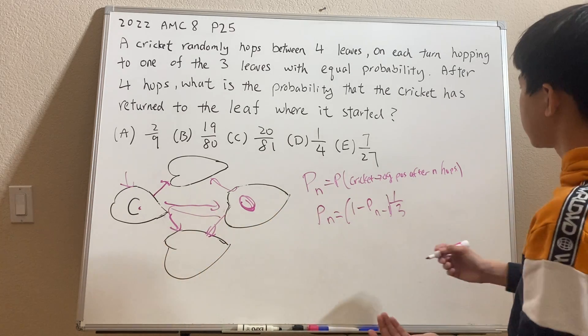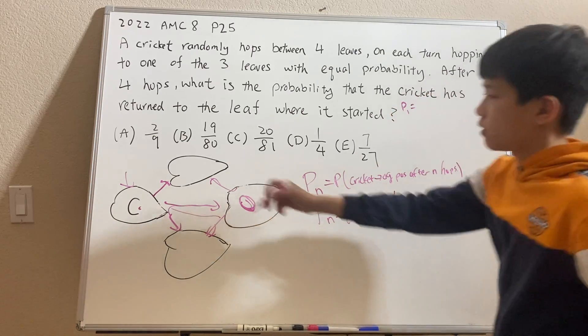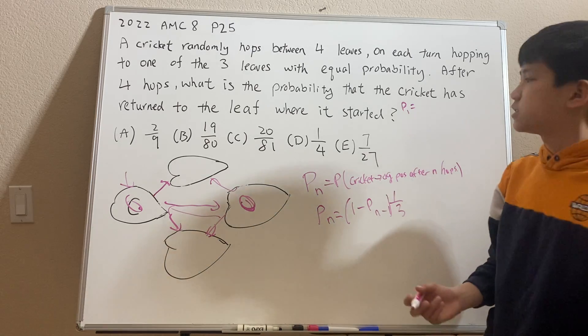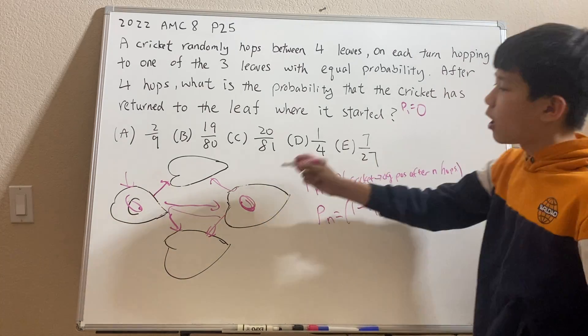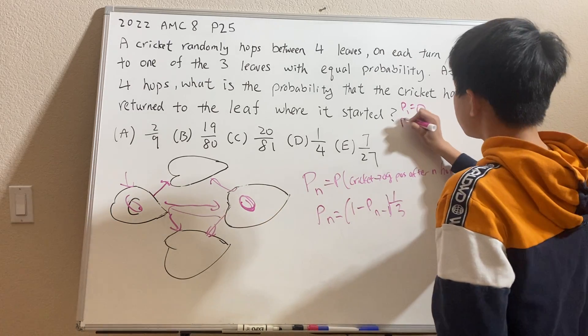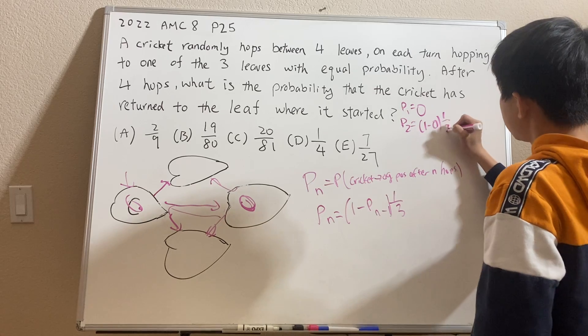So now we can just start plugging in values. P(1), after one hop, so in the beginning, the cricket is right here in the original position. P(1) is just zero because it's impossible to return to its original position. Now P(2), we can just plug into the recursion, just chug it in. 1-0 times 1/3, 1/3.